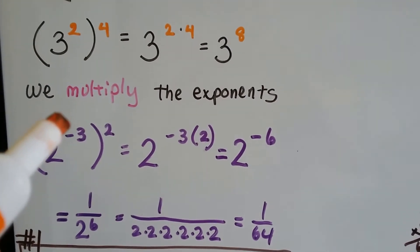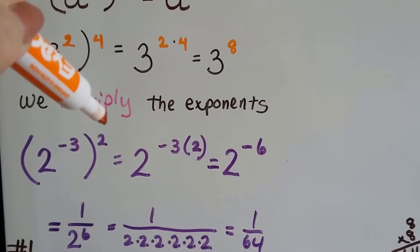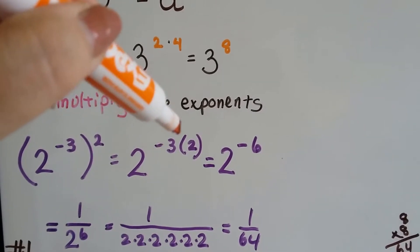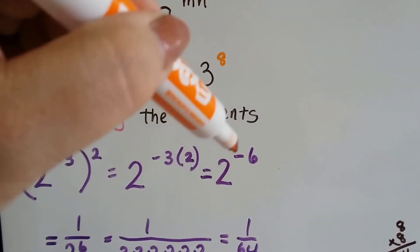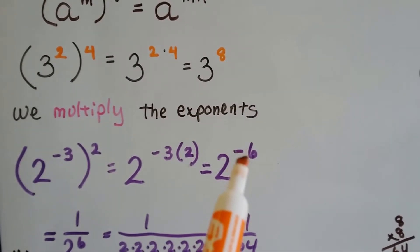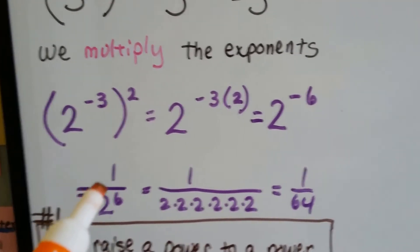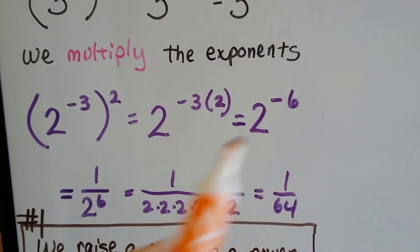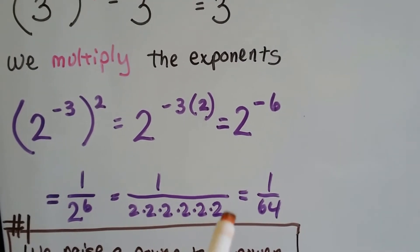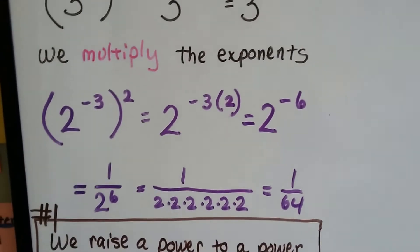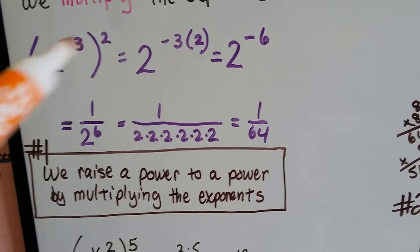If we have 2 to the negative 3rd inside parentheses and a little 2 exponent on the outside, that means we've got 2 to the negative 3 times 2. A negative times a positive makes a negative, so we've got 2 to the negative 6. Remember, when we see a negative exponent, it means fraction. So that means we've got 1 over 2 to the 6th — the negative sign comes off when we turn it into a fraction — which means 1 over 2 times 2 times 2 times 2 times 2 times 2, which would be 1/64.